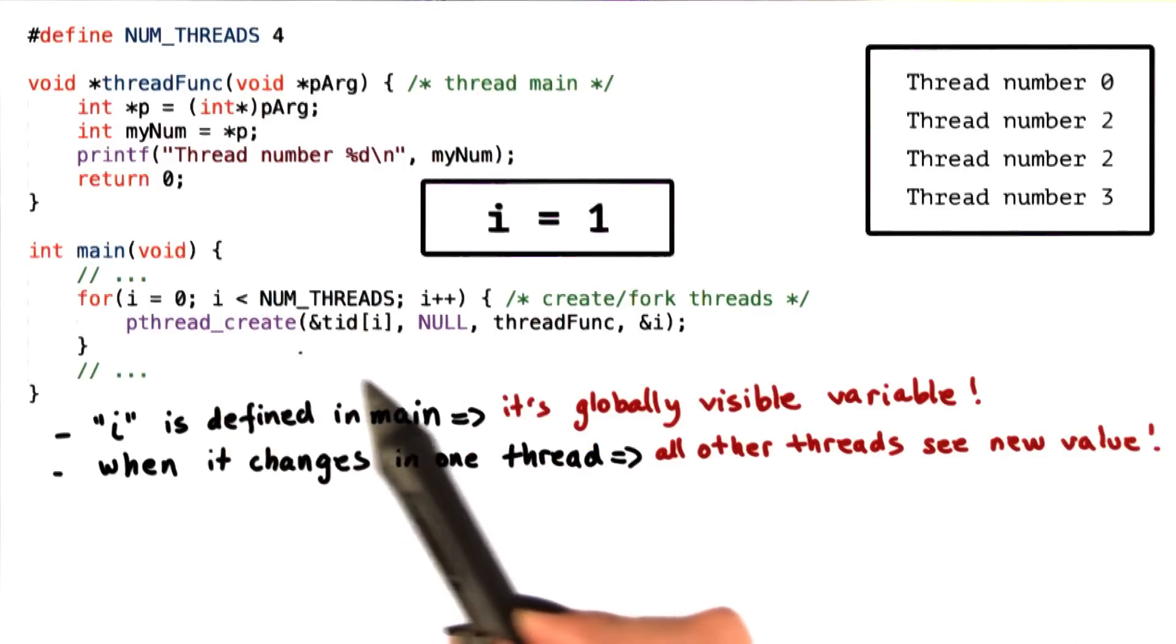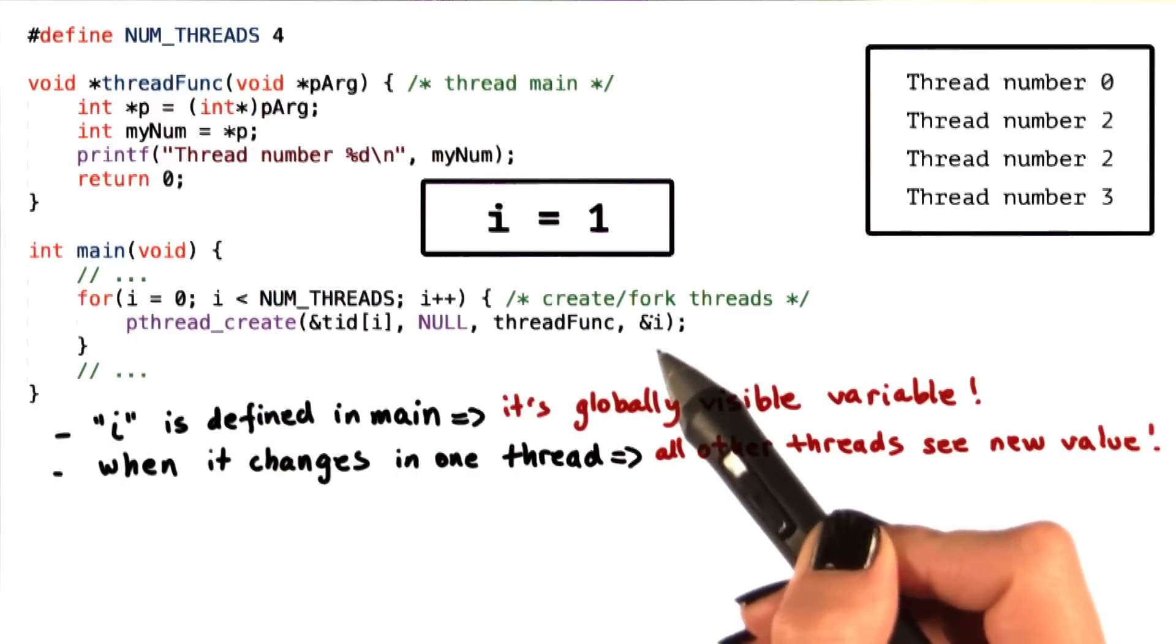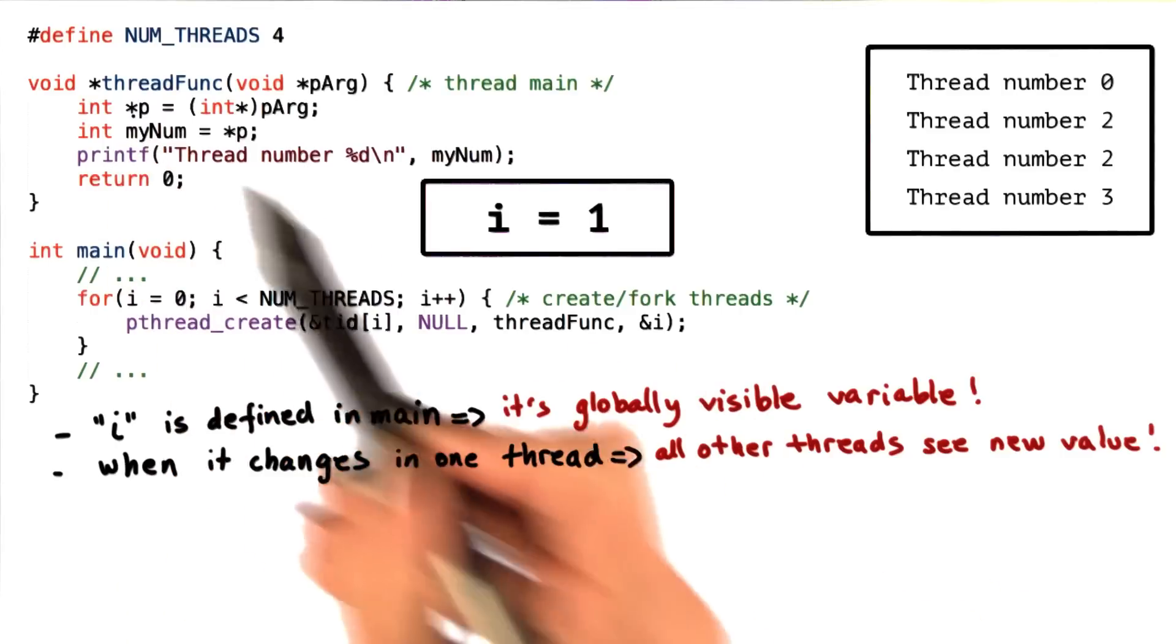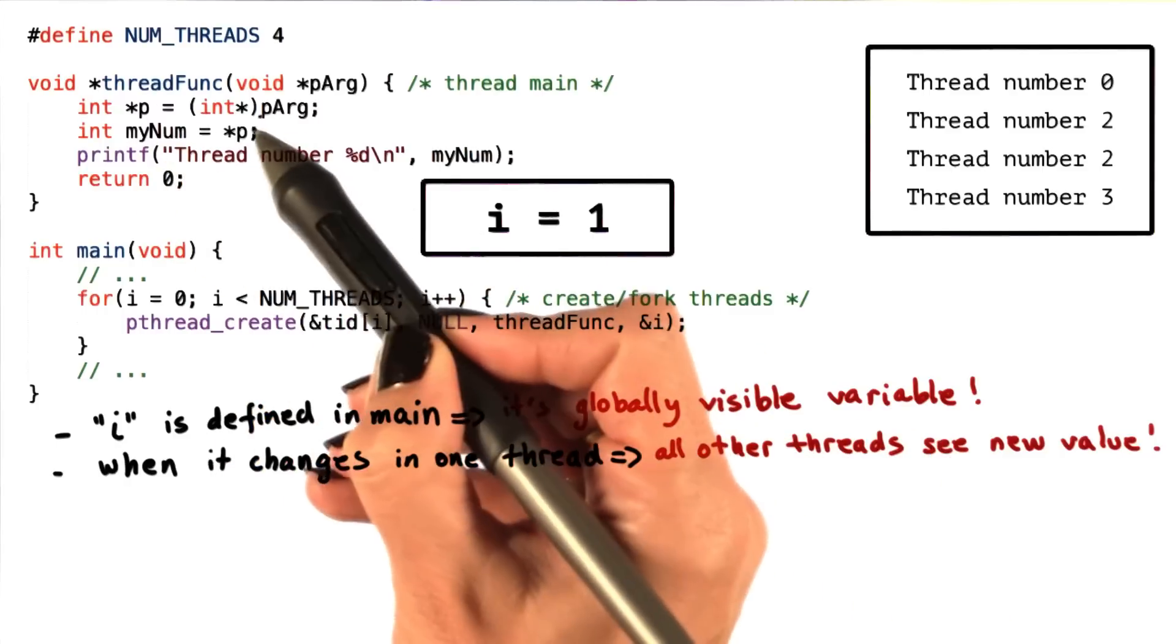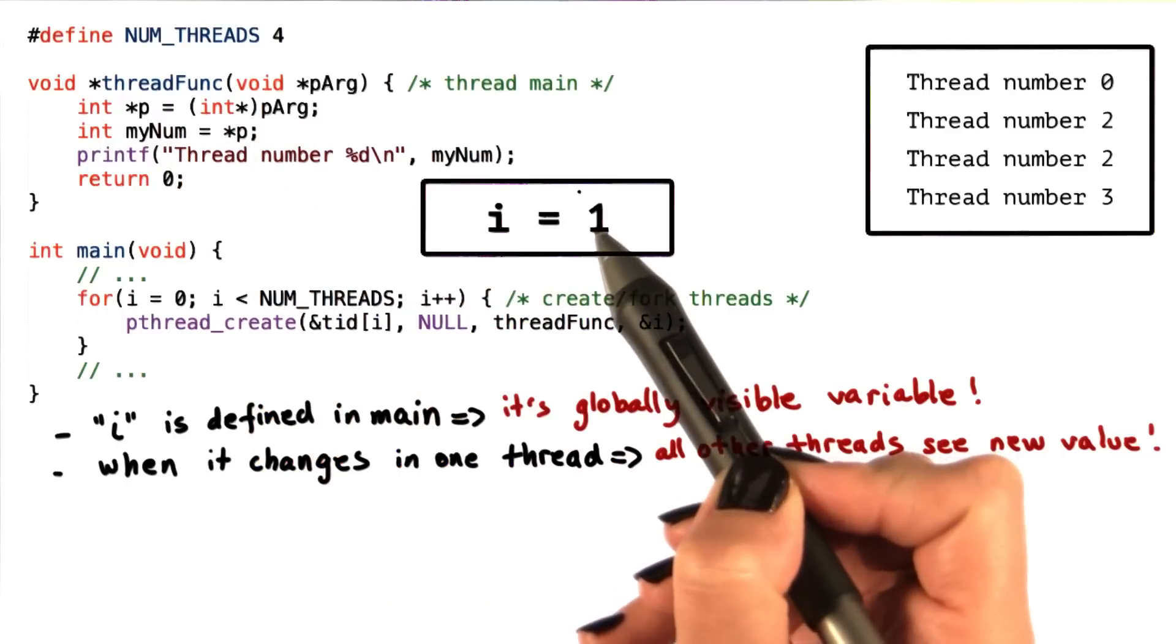In this particular case, the second thread that was created in pthread_create was created with i equal to 1. In the thread function, p will become equivalent to the address of i, and myNum will then become equivalent to the actual value of i, so that's presumably 1.